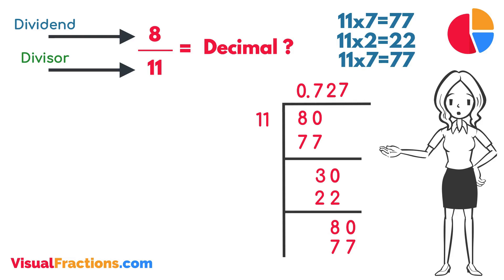We stop at 0.727 for this explanation, but if we continue the division, we would find that the digits after the decimal point start to repeat, forming a recurring decimal. In the case of 8 elevenths, if we continued, we would see a repeating sequence. However, for many practical purposes, rounding to 3 decimal places, as we've done here, is sufficiently accurate.